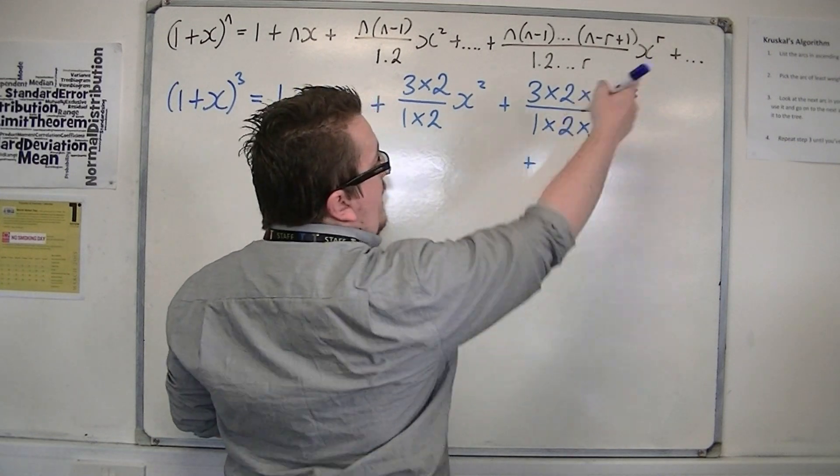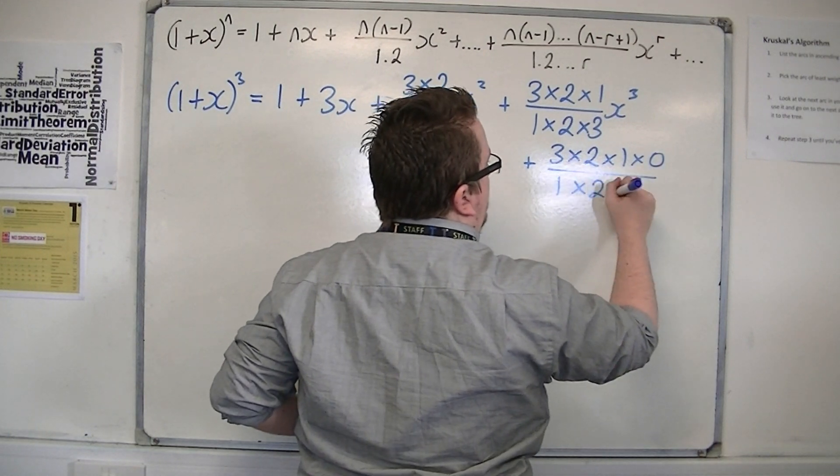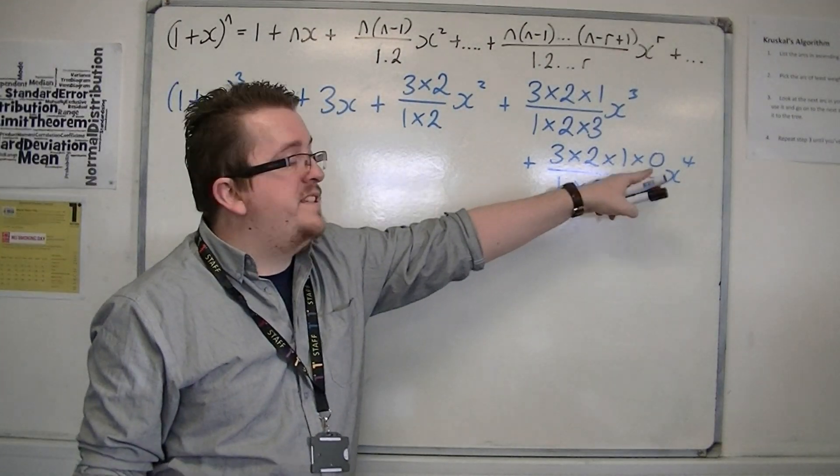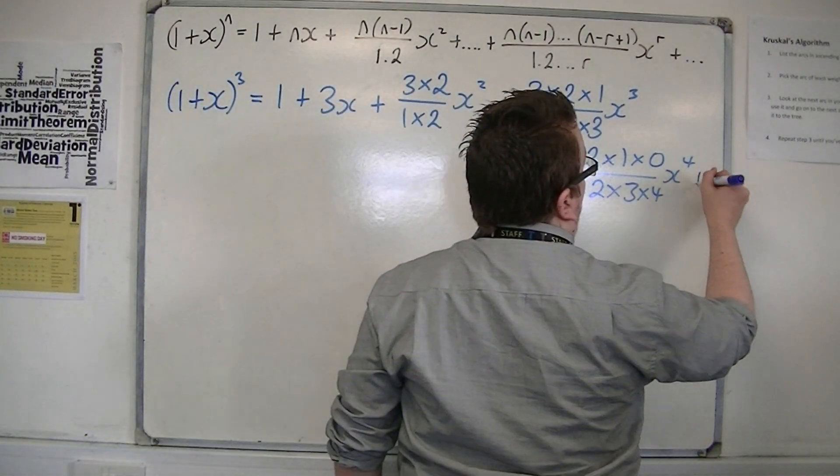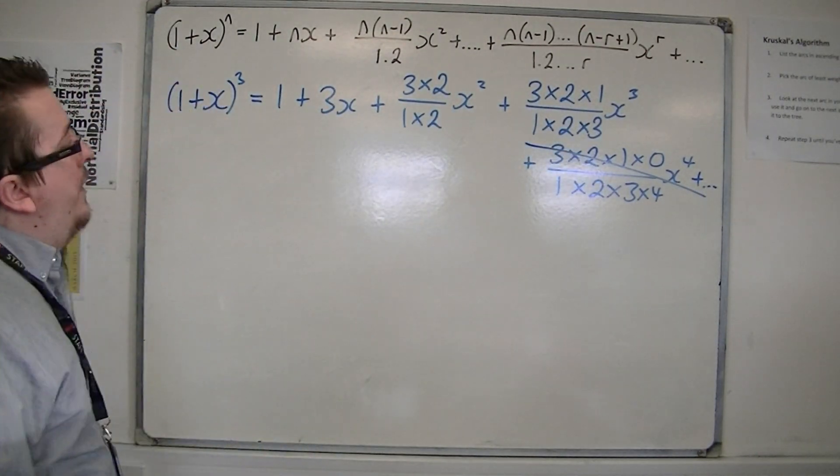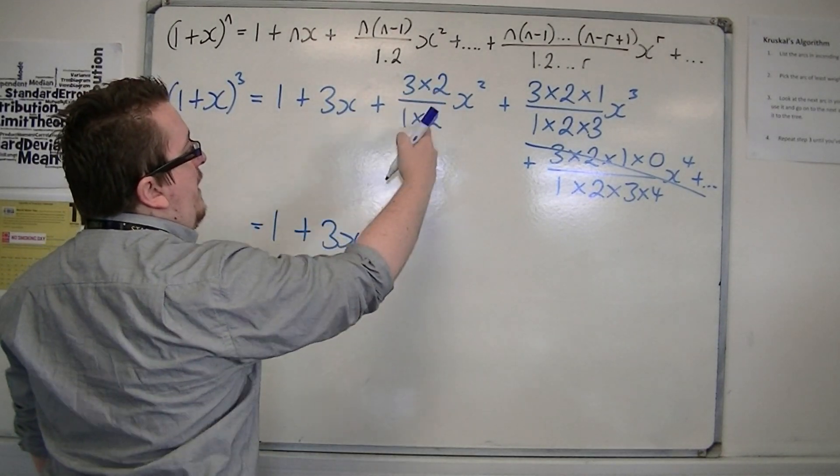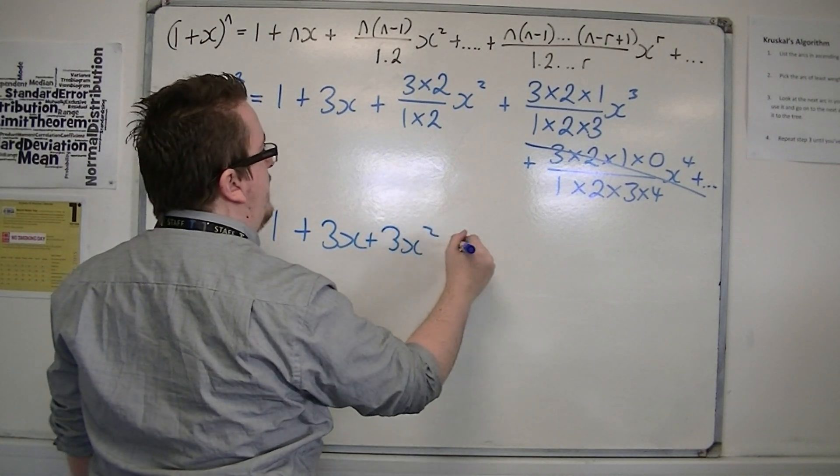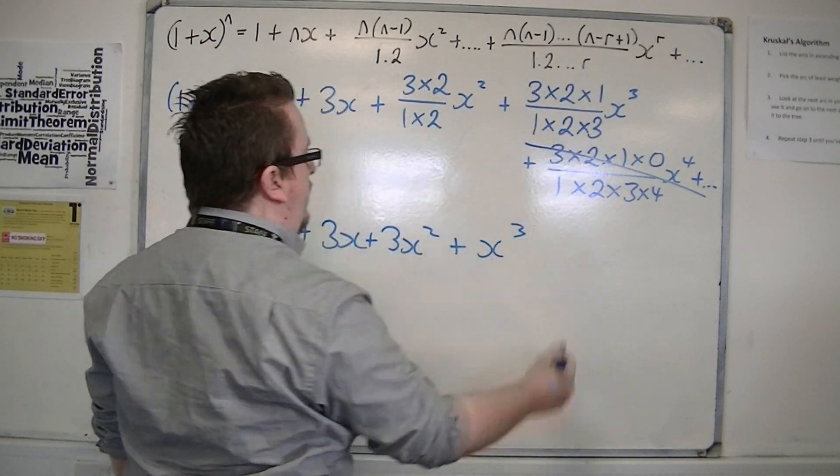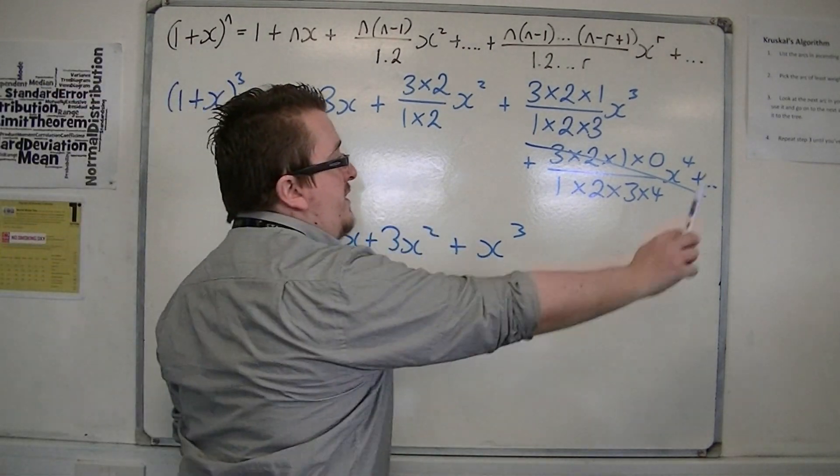And then the next term on would be 3 times 2 times 1 times 0 over 1 times 2 times 3 times 4 times x⁴. But you can see that the coefficient here is going to be 0 because I've got 0 in the numerator. So all the respective terms after that are just going to be 0. So the only terms that I'm looking at are these four here. So I can write that as 1 + 3x + 3x² + x³. So we get, as we would expect, 1 + 3x + 3x² + x³, and all the other terms are going to be 0.